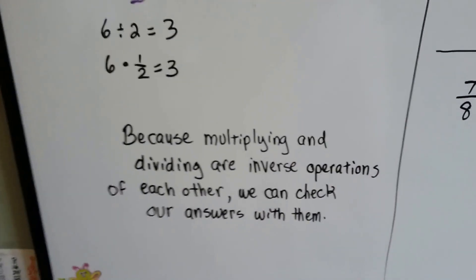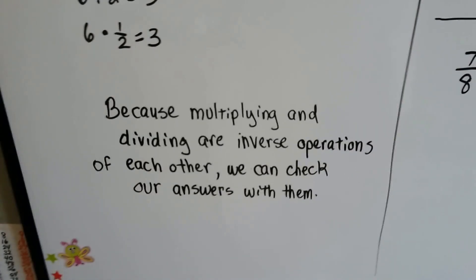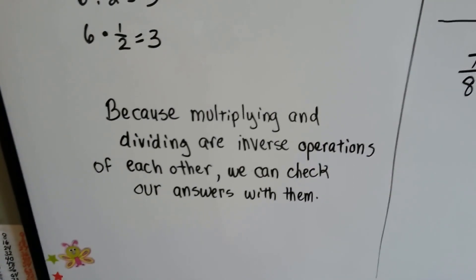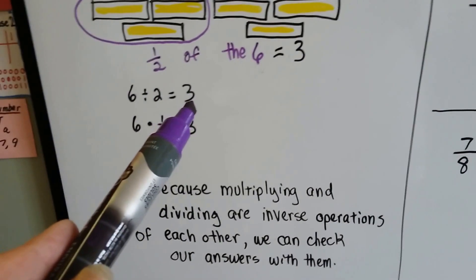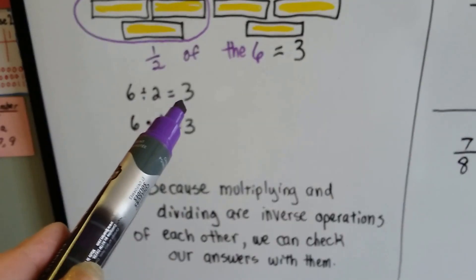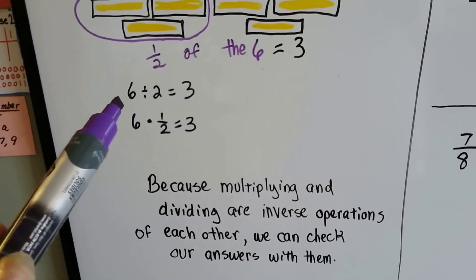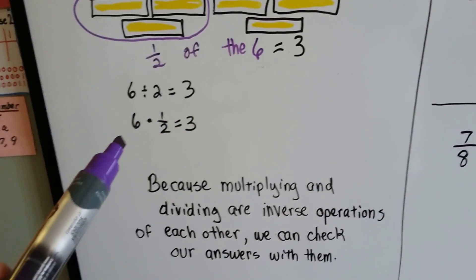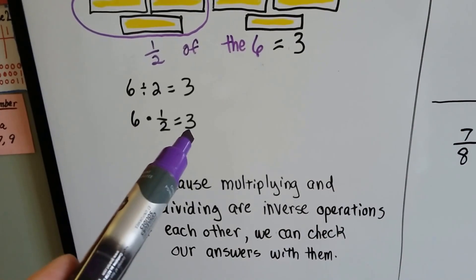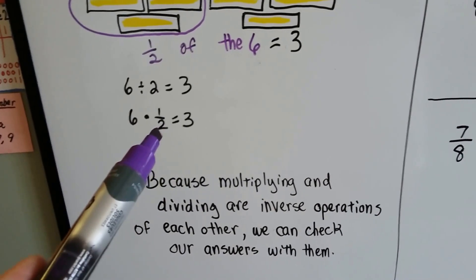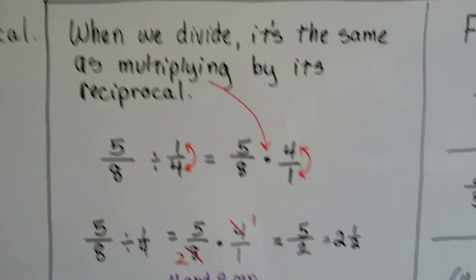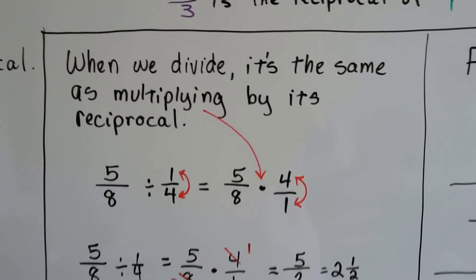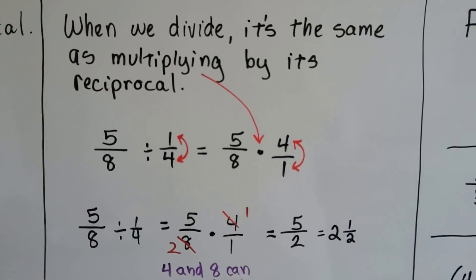Because multiplying and dividing are inverse operations of each other, we can check our answers with them. When we divide, we can check with multiplication. 6 divided by 2 equals 3; 3 times 2 equals 6. 6 times a half equals 3; 3 divided by a half equals 6. We can just go backwards and do the opposite to check it. When we divide, it's the same as multiplying by its reciprocal.